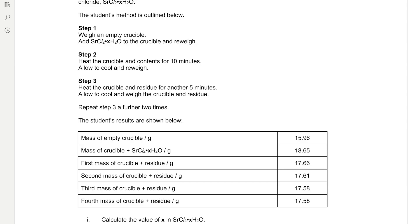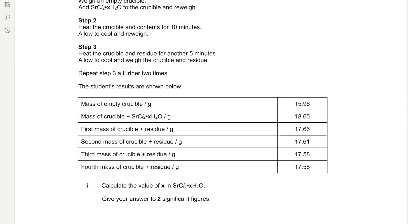There's a lot of information here to break down. It helps to annotate the question to identify the important pieces of information. First we have the mass of the empty crucible in grams, then the mass of the crucible with the hydrated strontium chloride — so we can calculate the mass of the hydrated strontium chloride. Then we have the 1st, 2nd, 3rd, and 4th masses of the crucible with the residue. Between the 3rd and 4th masses there is no change, so this is the actual mass of the strontium chloride with all the water of crystallization removed.